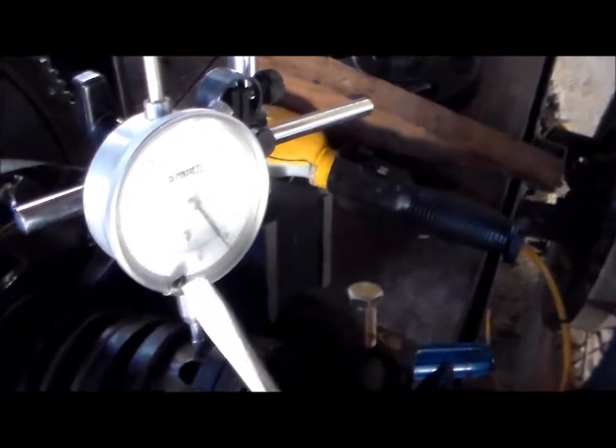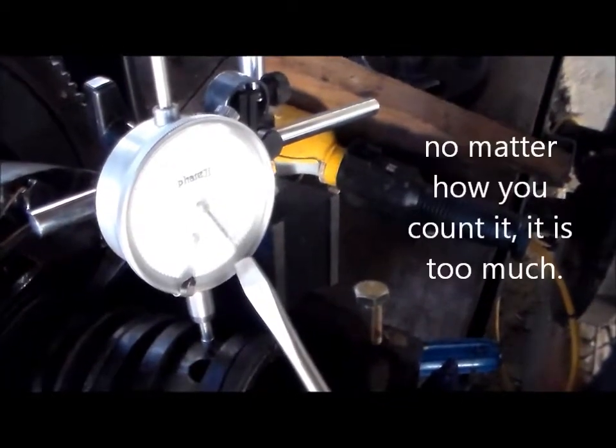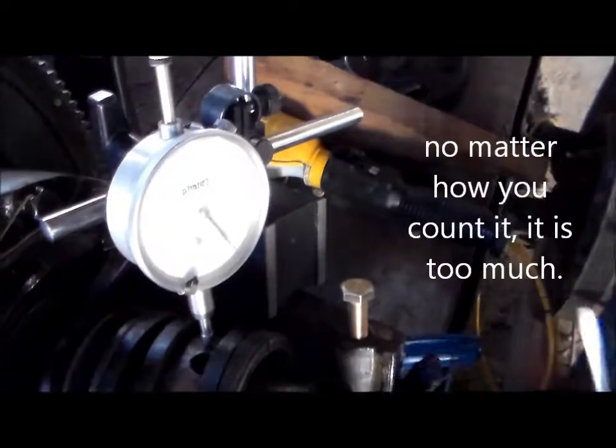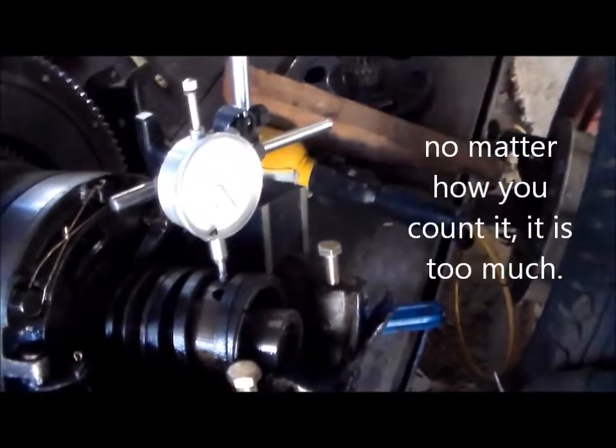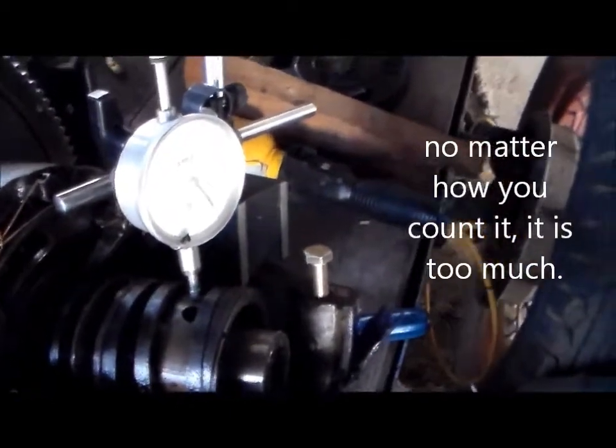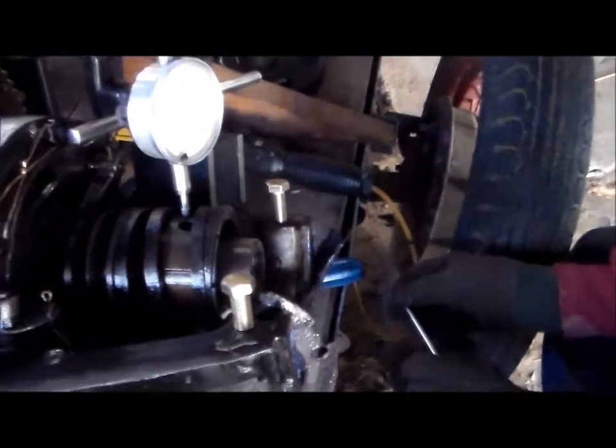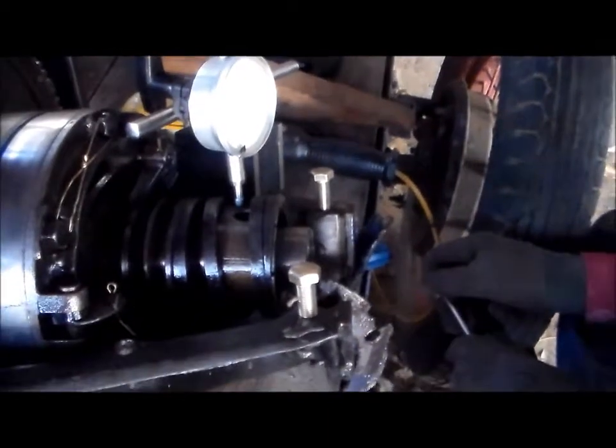All right. That's a hundred and ten, twenty, thirty... one thousandths. One hundred and forty thousandths. It's forty thousandths over a tenth of an inch.